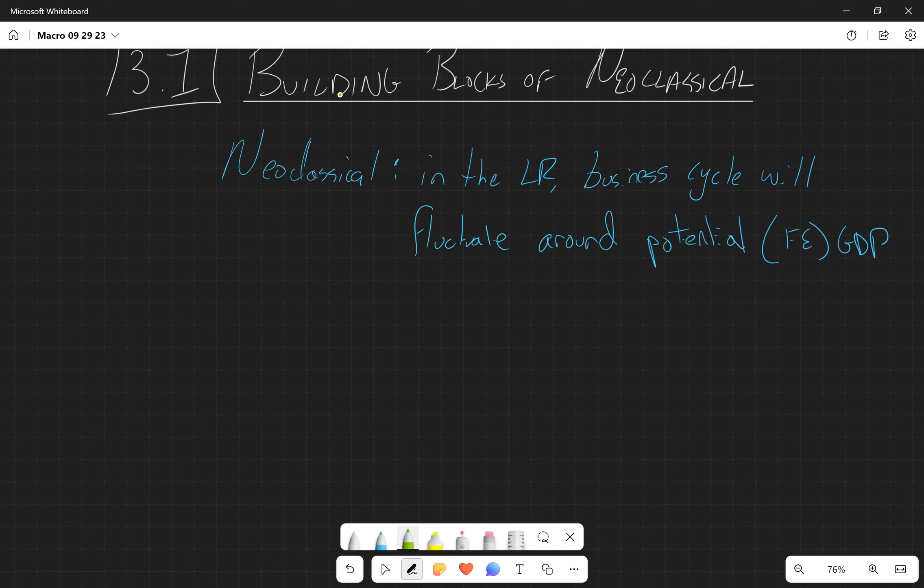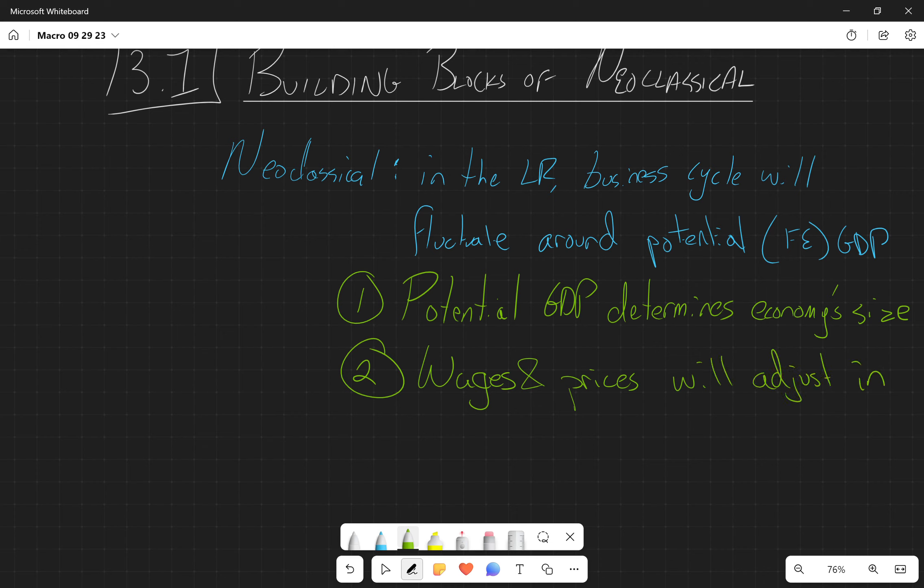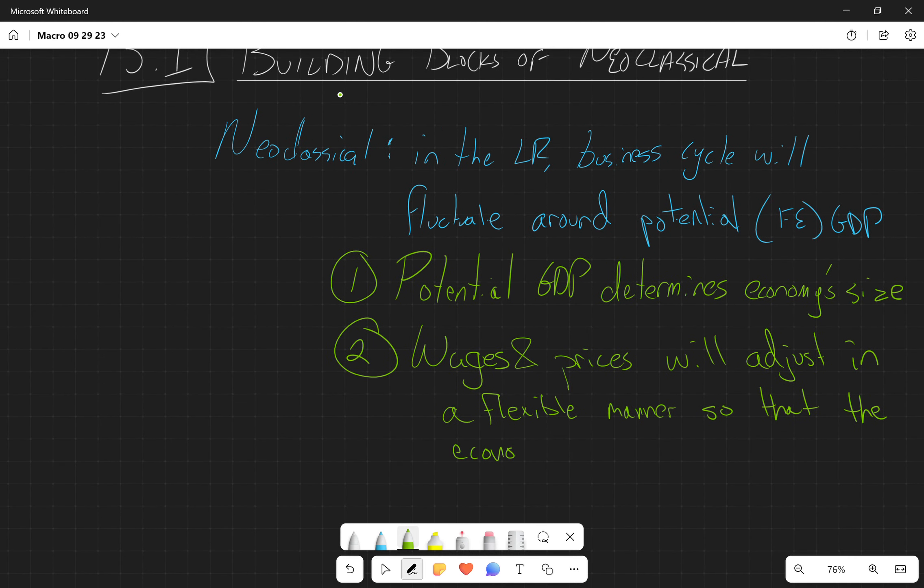So the main building blocks of the neoclassical economics is the fact that one, potential GDP determines the economy's size. And then two, the fact that wages and prices will adjust in a flexible manner so that the economy will adjust back to YP, potential GDP.